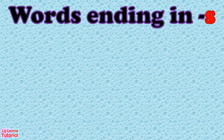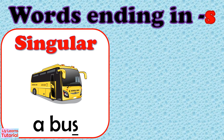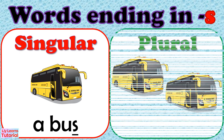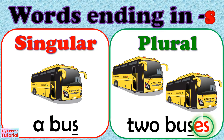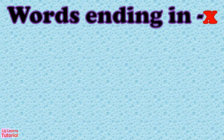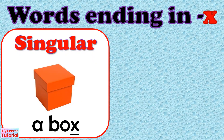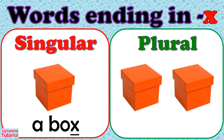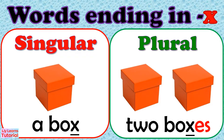For words ending in "-s", like bus, we simply add "-es" to the word. Bus becomes buses. For words ending in "-x", like box, we simply add "-es" to the word. Box becomes boxes.